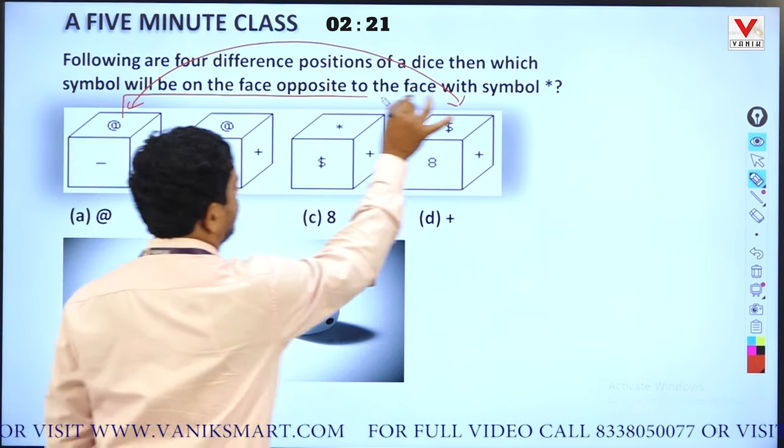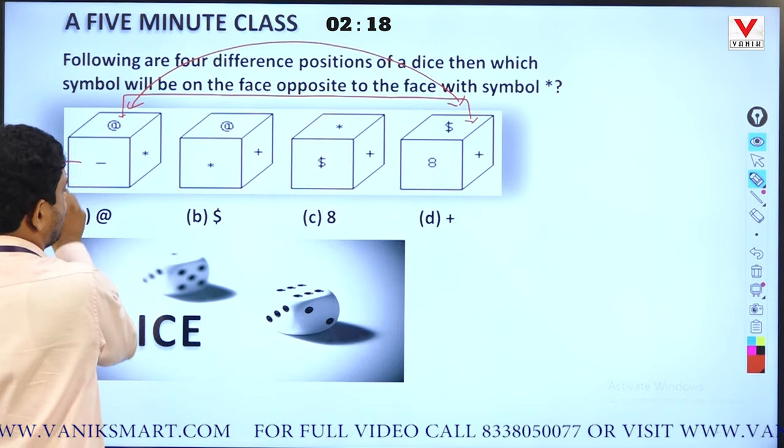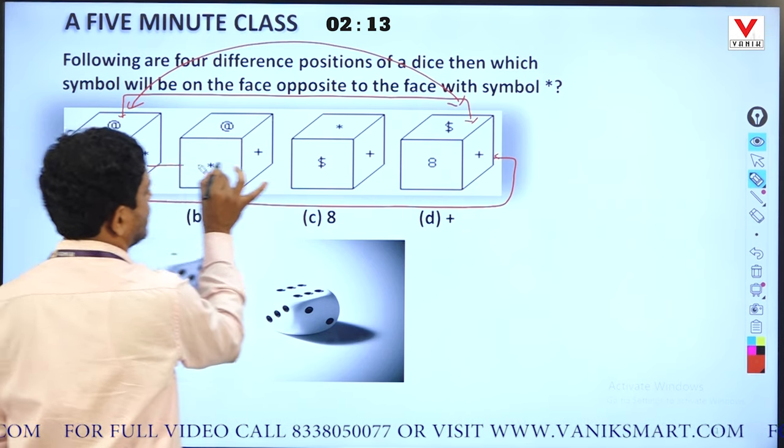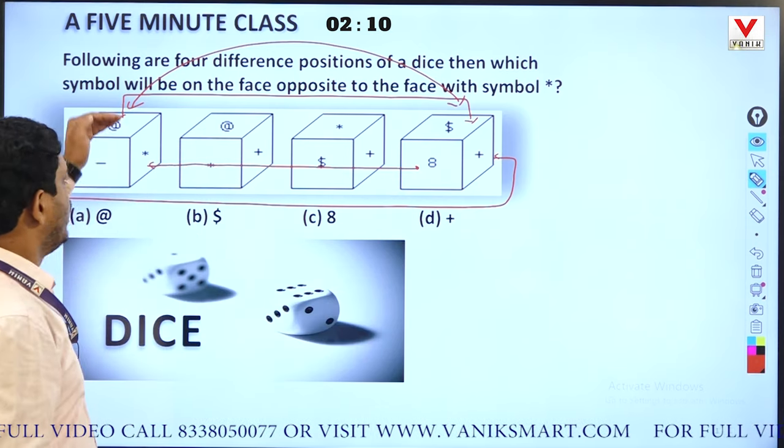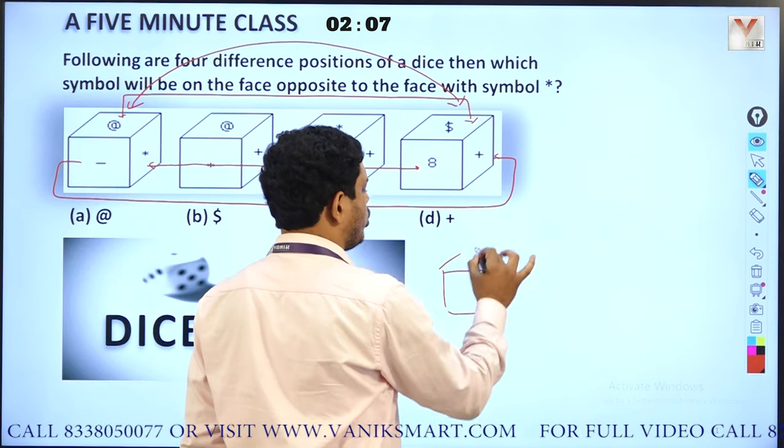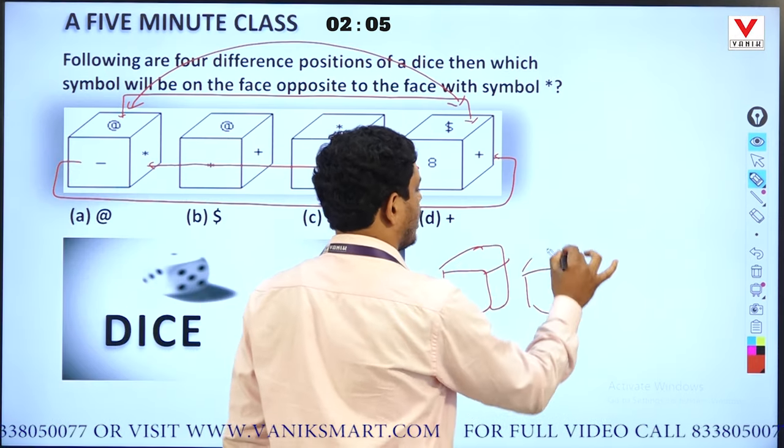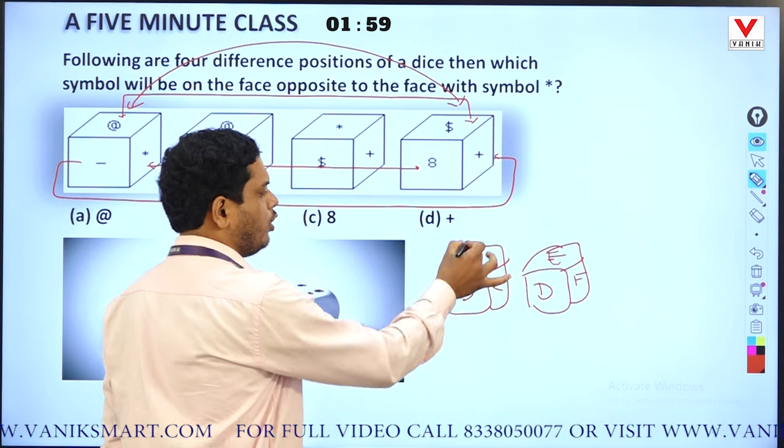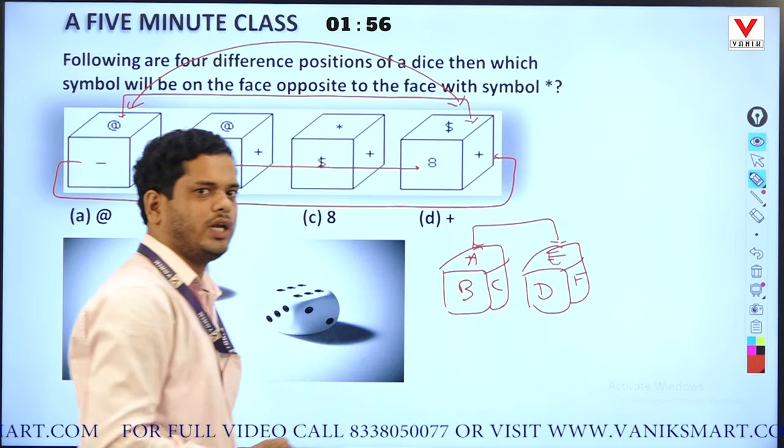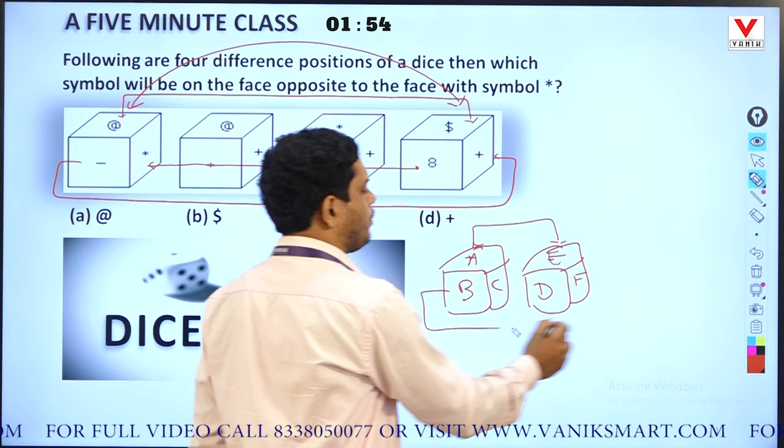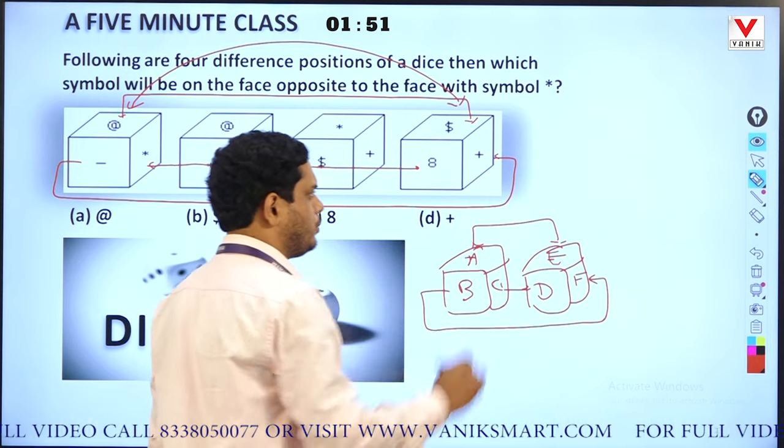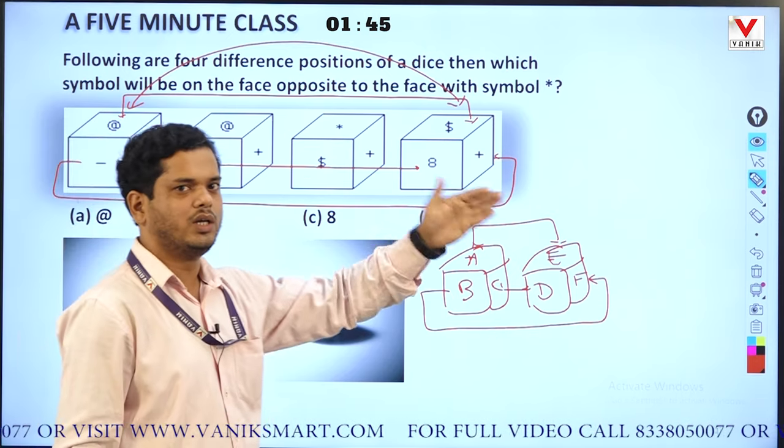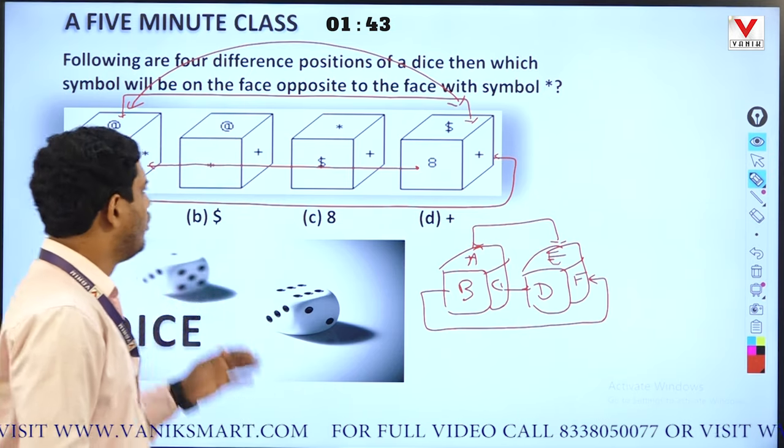If no face is common between two dice, you can directly determine the answer: top will be opposite to top, left will be opposite to right, and face to face will be opposite to each other. Is that clear? If no face is common in two dice positions, then top is opposite to top, left is opposite to right, and face to face are opposites. That exact thing has happened here in the first position and fourth position - the relation is quite clear showing which faces are opposite.